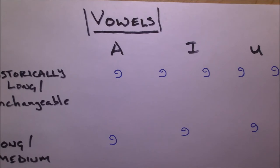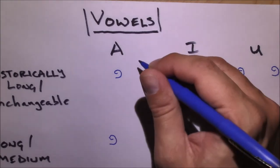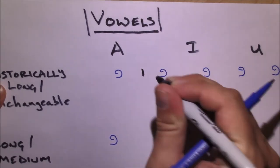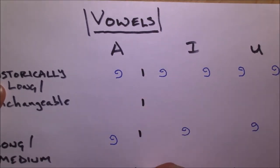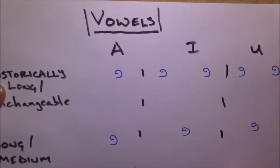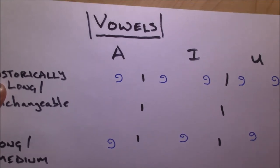If they need to be lengthened in a process called compensatory lengthening, they will do so, once again, according to class. And I'm going to draw some lines here to help distinguish where our classes are.